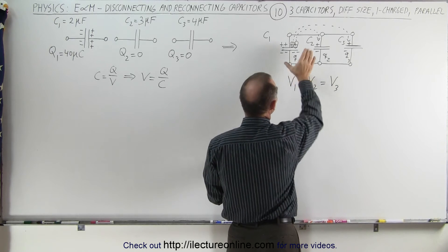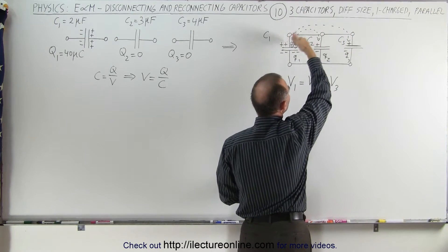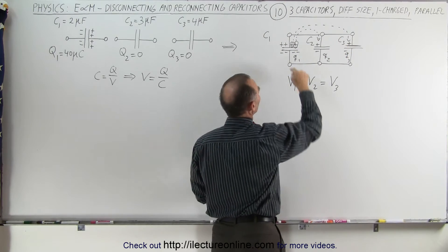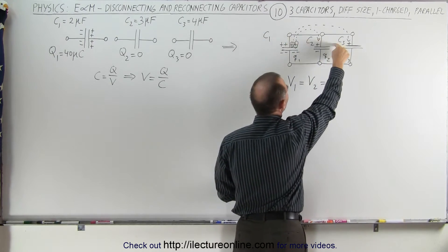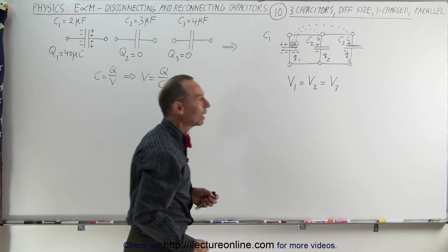Notice again that the original charge we had on the first capacitor is going to redistribute itself onto the other two capacitors in such a way that you have the positive end of each capacitor connected together and the negative end of each capacitor connected together.